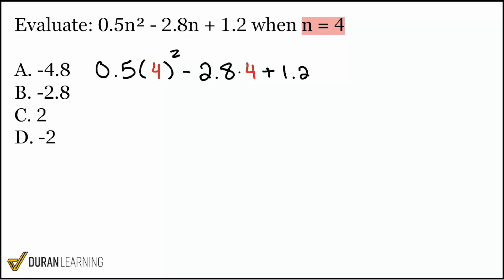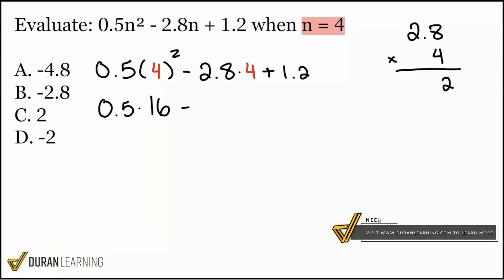So now that we're here, next up we'll go ahead and perform this exponent 4 squared, which gives us 16. And so we have 0.5 multiplied by 16 minus 2.8 times 4. Let's figure out what that is real quick. 2.8 times 4, so 8 times 4 gives us 32, carry the 3. 2 times 4 gives us 8, carry the 3 is 11. Then we bring one decimal place back right here at the end, so we end up having 11.2.